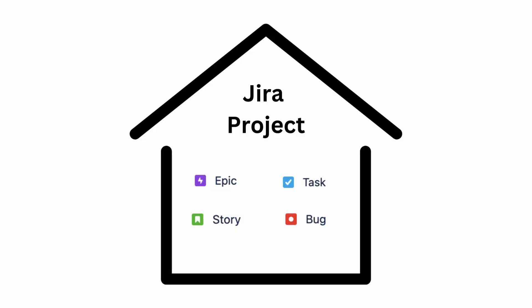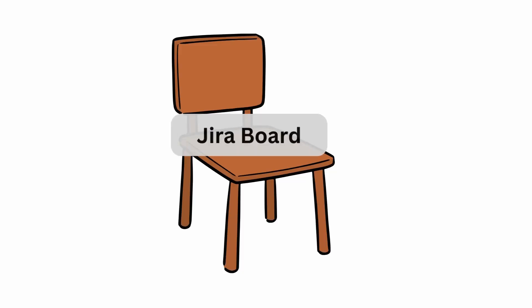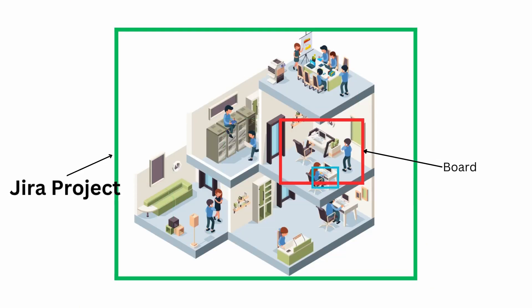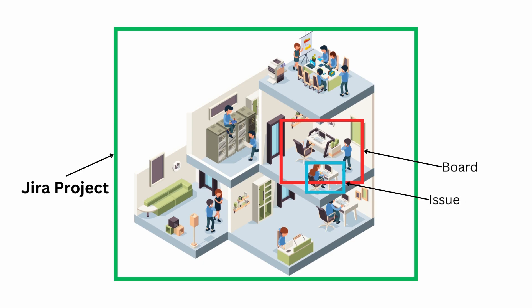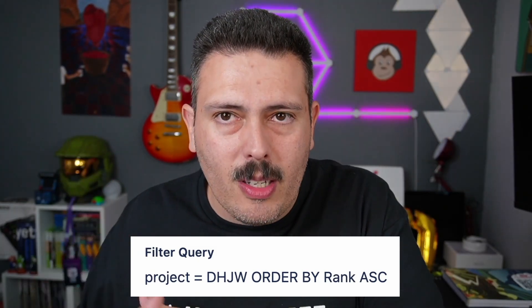I am being very deliberate here: issues live in projects. A board, on the other hand, sits on top of a project. Think of a Jira project like a house, a board as a room in that house, and issues as furniture inside that house — which is also inside a room. That's why, for the most part, you can think of them as interchangeable words. Any issue in this project will automatically show up on the board, so it's a one-to-one relationship.